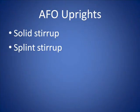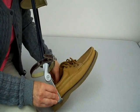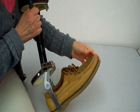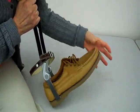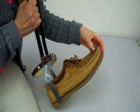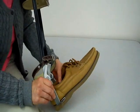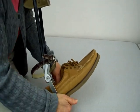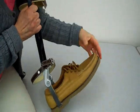The uprights can be attached to an AFO using a solid piece of metal riveted to the bottom of the shoe. A solid stirrup is more stable but the person is limited to wearing only one pair of shoes. A split stirrup has uprights that can be removed and replaced into other shoes. This AFO also has dorsiflexion assist — the person uses plantar flexor muscles to plantar flex when pushing off, and as the weight comes off the foot during swing, the spring dorsiflexes the foot.